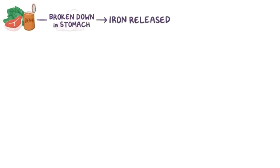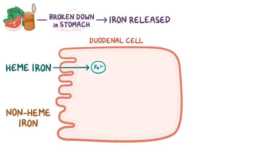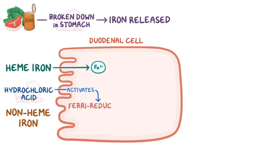When food is broken down in the stomach, iron is released. Heme iron is absorbed directly into the duodenal cells, where it's broken down to release Fe2+ molecules. Non-heme iron, however, needs to be reduced to heme iron first. So the stomach's hydrochloric acid activates a group of enzymes in the duodenal cells, collectively called ferroreductase, which live up to their name by reducing non-heme iron to Fe2+ molecules.